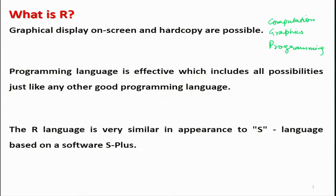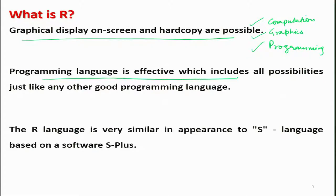In the second type of software, you go to a prompt, type the command, and the task is executed. In R, all things are possible — you can execute different types of computations, create different types of graphics, and also do programming. In R, both the graphical display on screen and hard copies are possible. The programming language is quite effective and includes all sorts of possibilities available in any other good programming language. Now, an interesting story — why did R come into existence? What motivated people to develop this R software?